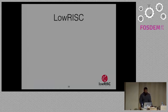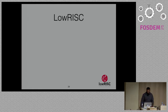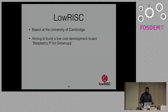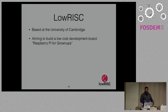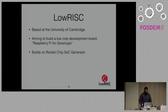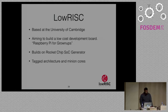Another interesting RISC-V SOC is the LowRISC project, based at the University of Cambridge — you may have seen Alex Bradbury's talk about it at FOSDEM two years ago. LowRISC aims to build a really low-cost development board; their tagline is 'Raspberry Pi for grown-ups.' It was actually founded by one of the founders of Raspberry Pi, and the goal is to create a completely open version of the Raspberry Pi. It builds on the Rocket Chip SOC generator and does interesting research on tagged architectures for security and minion cores for I/O offload. Their code is on GitHub.